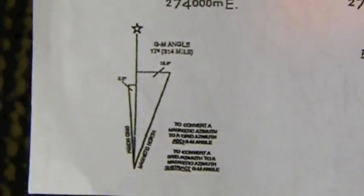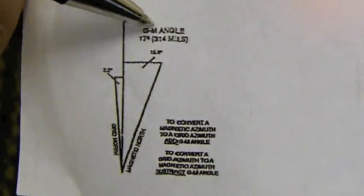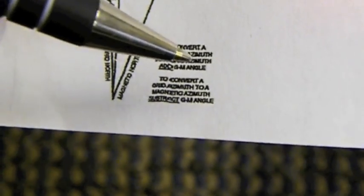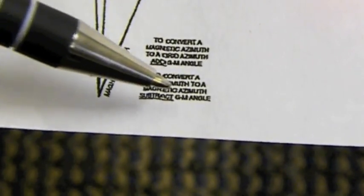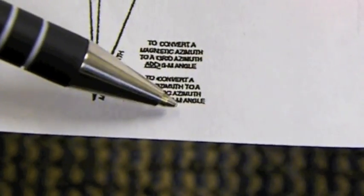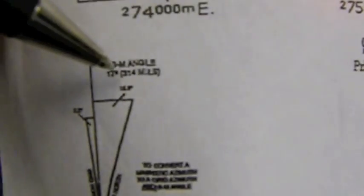Now we have to use the GM angle to compensate. We're going from grid to magnetic, not magnetic to grid. So to convert a grid azimuth to magnetic azimuth, subtract the GM angle, which was 17. And right there on the map, 17.